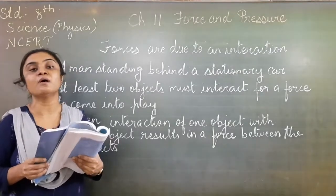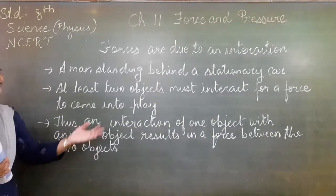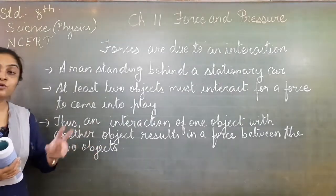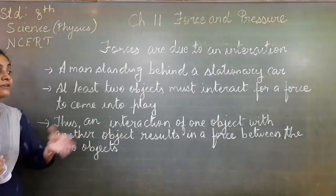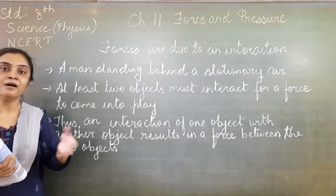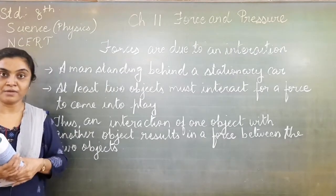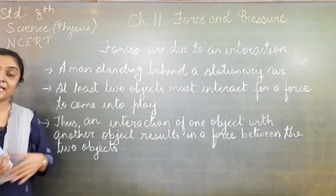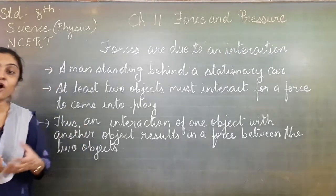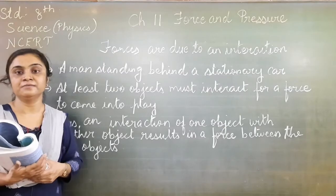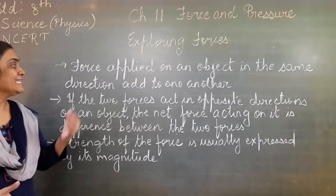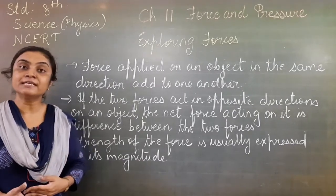Both objects should interact with each other. An interaction of one object with another object results in a force between the two objects. If one object is interacting with another object, that interaction results in a force. It should be in contact. A man is standing behind a car — the car will not move until and unless you push, until and unless you interact with that car. Then only you will apply force and the car will be able to move. To make an object move, the objects should interact with each other. Now let us see exploring force.